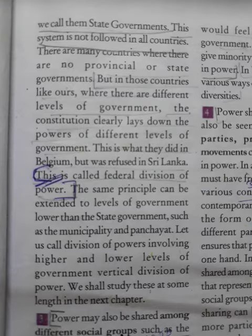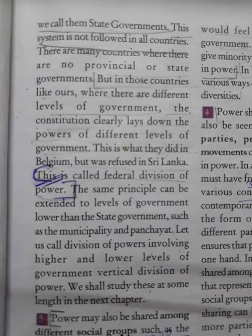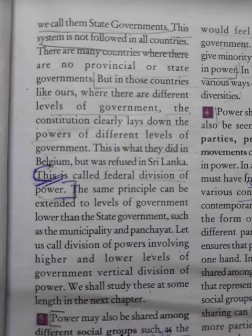Yeh joh division hai isse kehte hain federal division of power. Kuch union government ke paas, kuch state government ke paas, aur kuch powers diye gaye hain local government ko. So abhi hum ne short mein padha the second form of power sharing — between various levels of government. As I told you earlier, yeh joh forms of power sharing hum padh rahe hain, inhe hum aage aane wale chapters mein detail mein padhenge. Abhi tak hum ne two forms padhe: the first was horizontal power sharing between various organs of government, and the second was federal division of power between various levels of government.